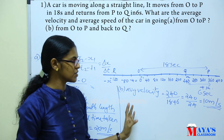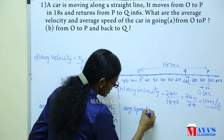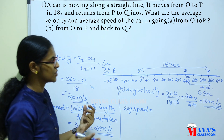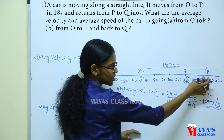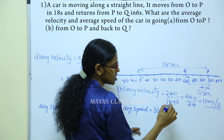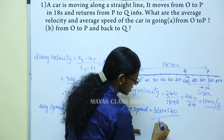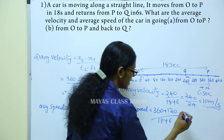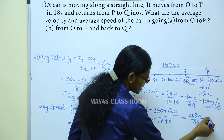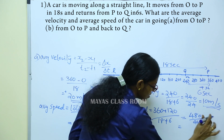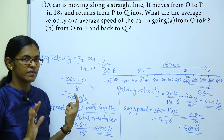For average speed, total path length is 360 plus 120 equals 480 meters. Total time is 18 plus 6 equals 24 seconds. Therefore average speed equals 480 divided by 24, which is 20 meters per second. So average speed equals 20 m/s and average velocity equals 10 m/s.